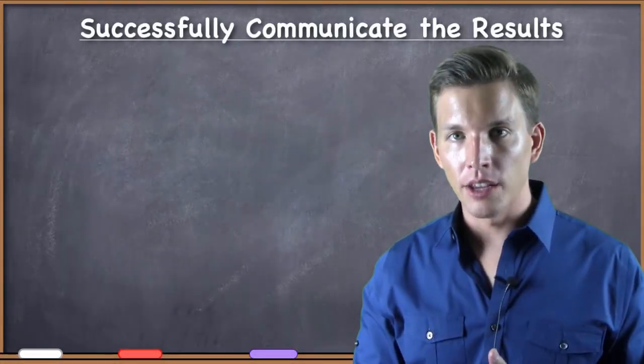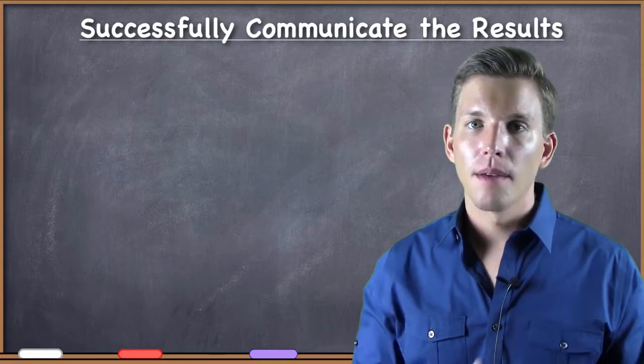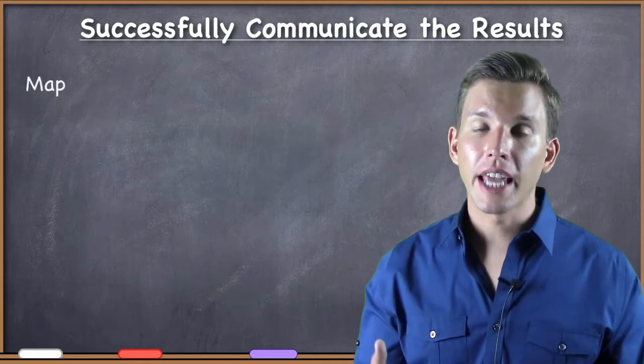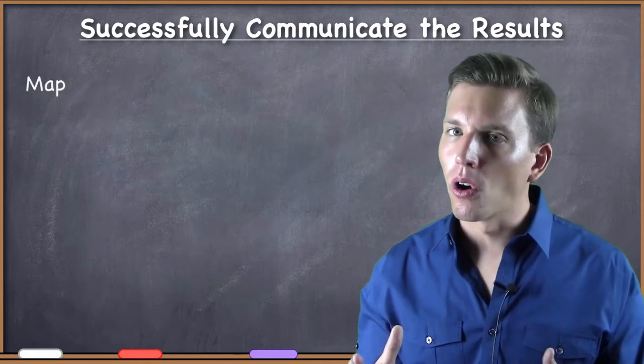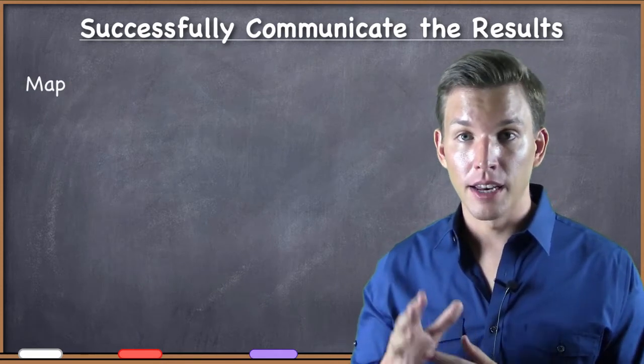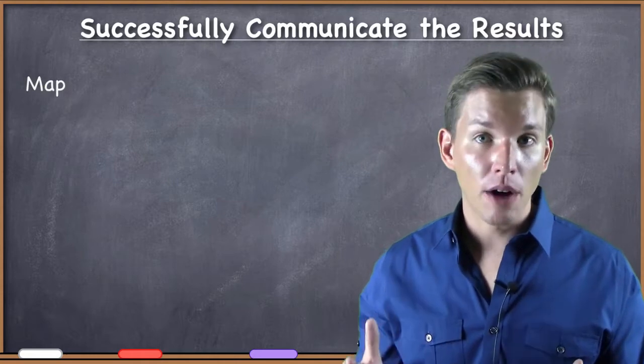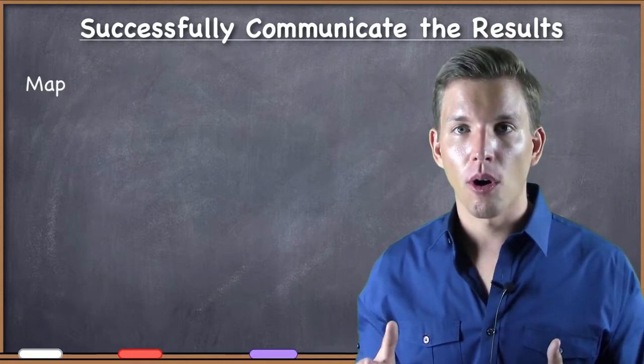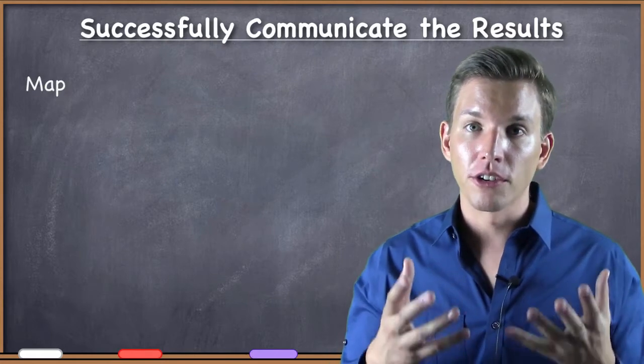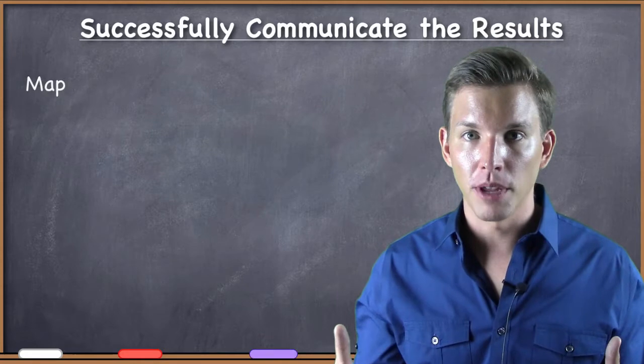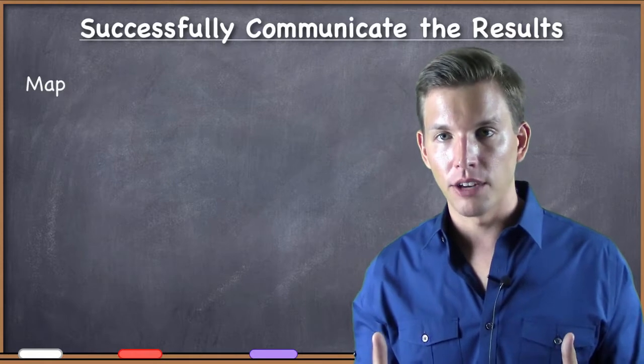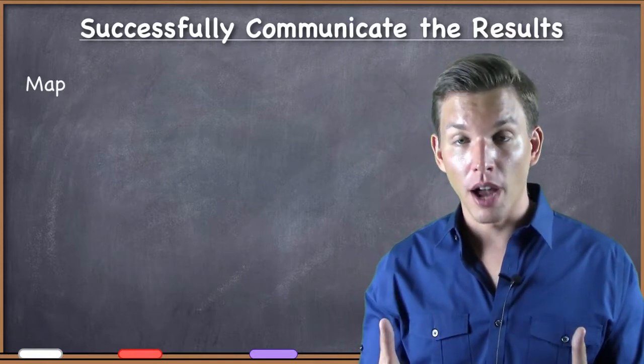There are many ways to communicate the results of a GIS project. Maybe the way that you most immediately think of is a map. It is the case that many, not all, but many results from GIS projects end up being communicated in map form. So learning how to create effective maps is a very important part of being a GIS specialist. When you finally have your result and you're going to communicate it to one person or a group of people in map form, you must know that the map that you create effectively communicates the information that you got as a result.